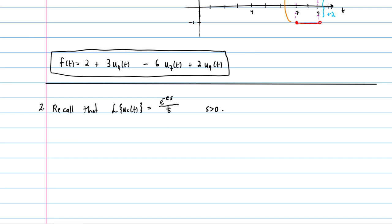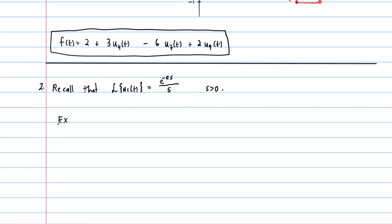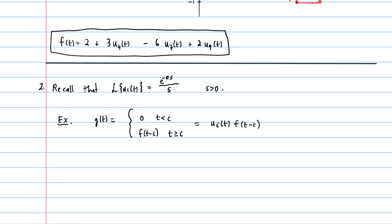Now, frequently what we'll have are step functions where the steps are not just flat constants — they might be given by a function. For example, we could have a function g of t that equals zero when t is less than c, but then steps up to f of t minus c for t greater than or equal to c. Another way to write this is as u sub c of t times f of t minus c.